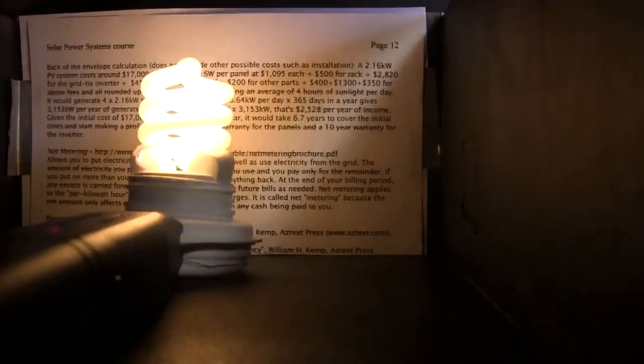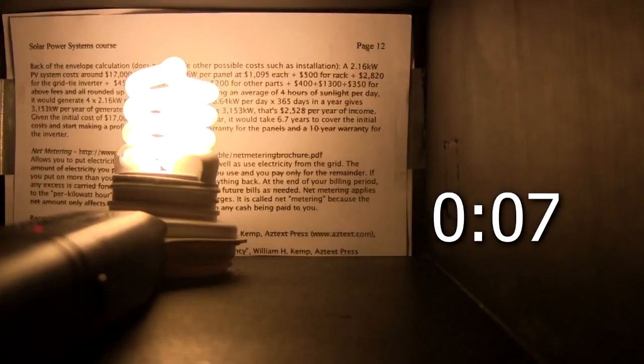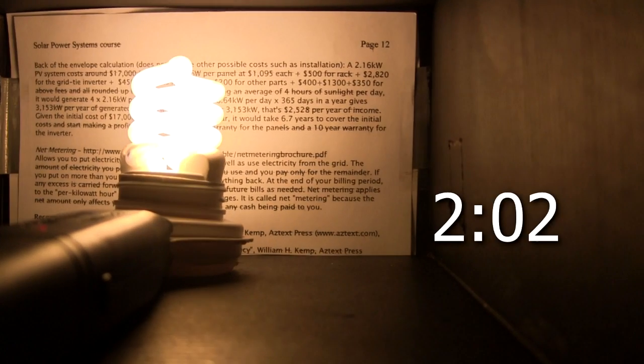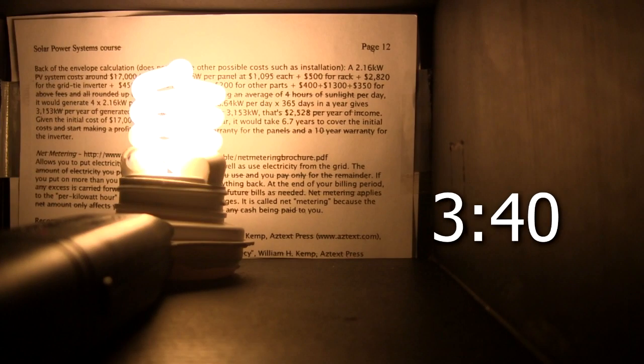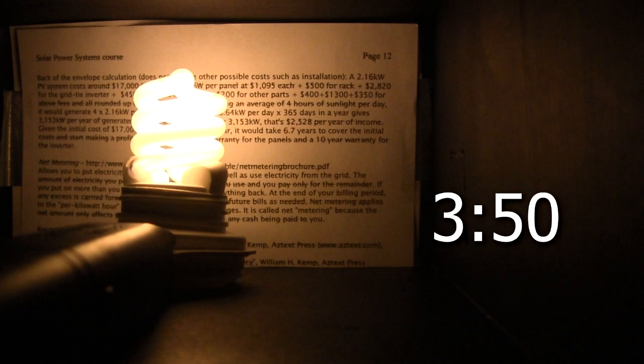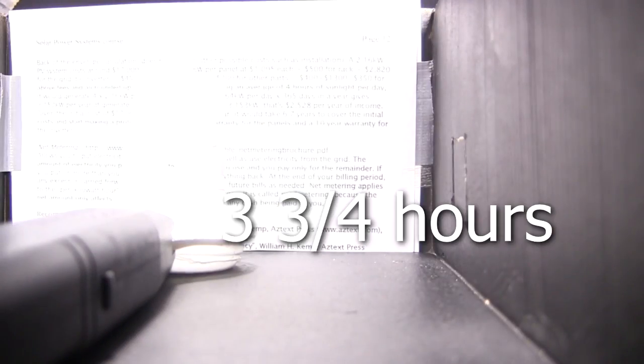I switch on the light, close the box, and start timing it. For the first 3 hours and 40 minutes, it keeps around the same brightness. But when I check 10 minutes later, at 3 hours and 50 minutes, it's much dimmer. Then 15 minutes after that, it's no longer lit. So I get around 3 and 3 quarter hours of good light.